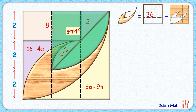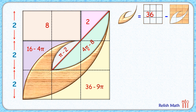From 4π we subtract the area of this triangle, which is half of 4 times 4, giving 8. So this green area is 4π minus 8.